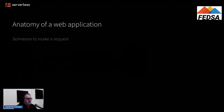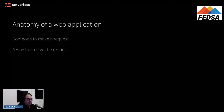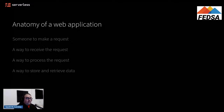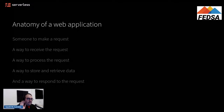Going through the bullet points: someone has to make a request in a web application, and then you need a way to receive those requests. If you have lots of people making requests, you need a really good way to receive and process this multitude of requests. The processing is going to require storage and retrieval of data. And then we need to respond to that request, hopefully through the same means that we received it in the first place. This is really the structure of what a web application looks like.